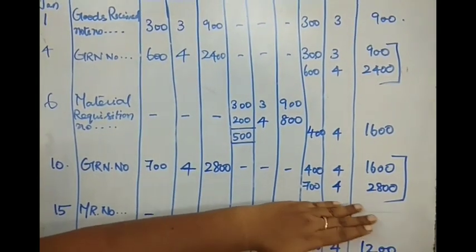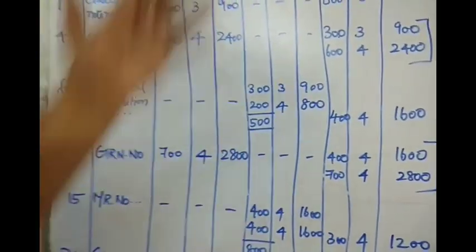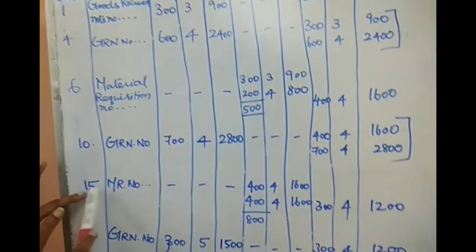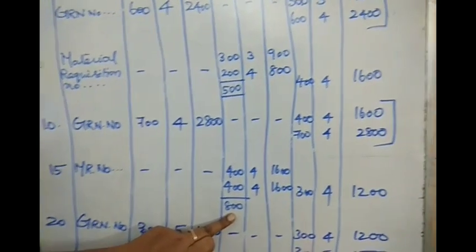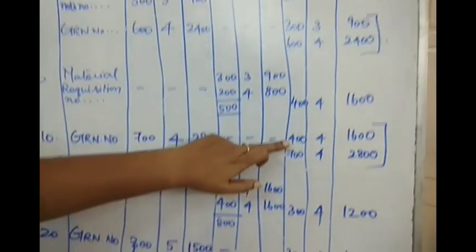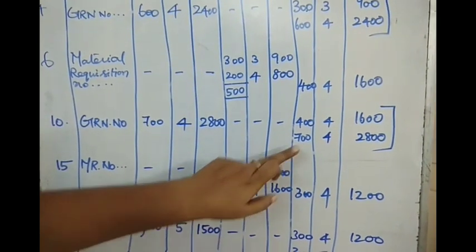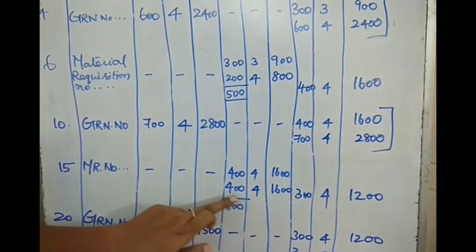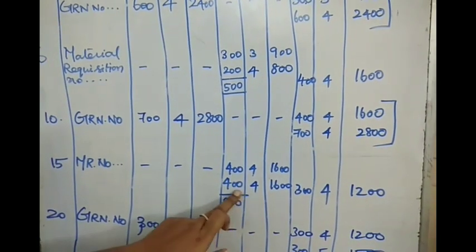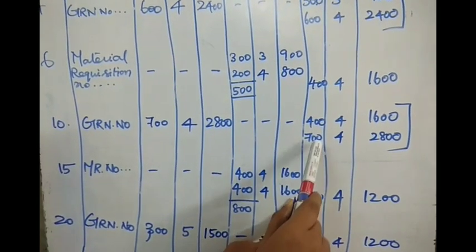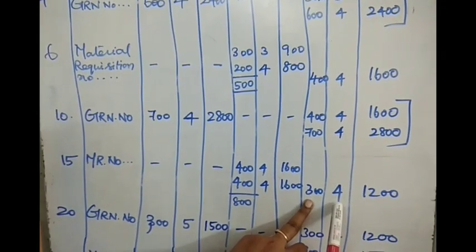Keep all transactions separately so you can issue according to the method given. On January 15th, there is an issue of 800 units. Using FIFO, I take the earliest batch of 400 units at ₹4 per unit, ₹1600. The remaining 400 units are taken from the latest batch of 700, at ₹4 per unit, ₹1600. Out of 700, 400 have been issued, and the remaining balance is 300 units at ₹4 per unit, ₹1200.